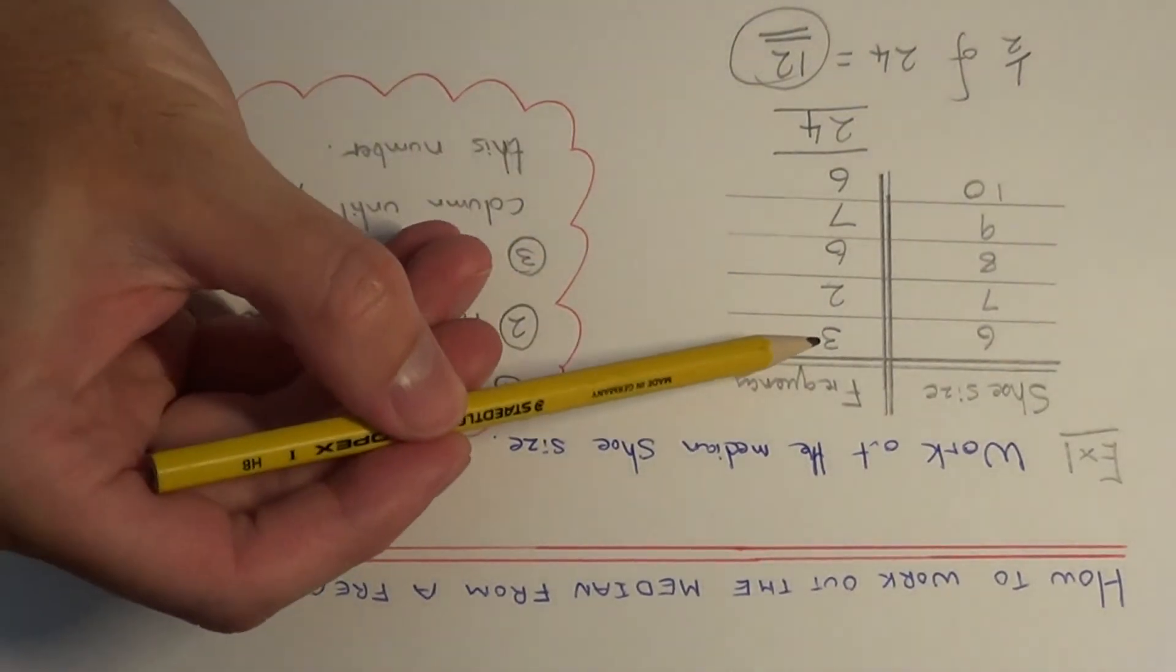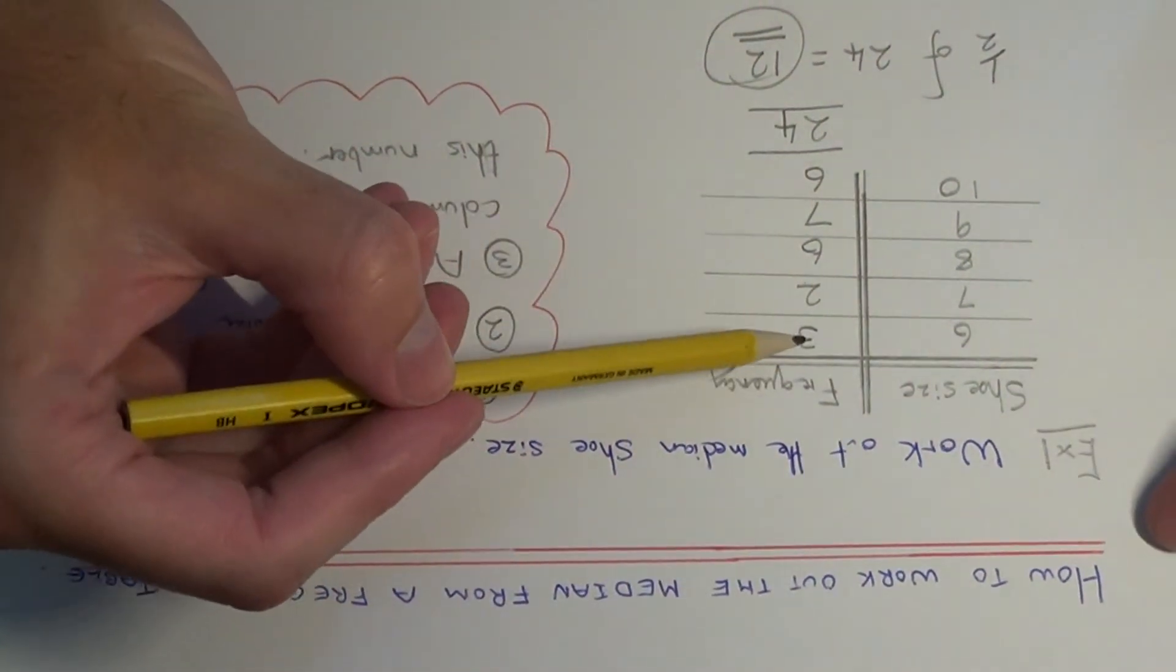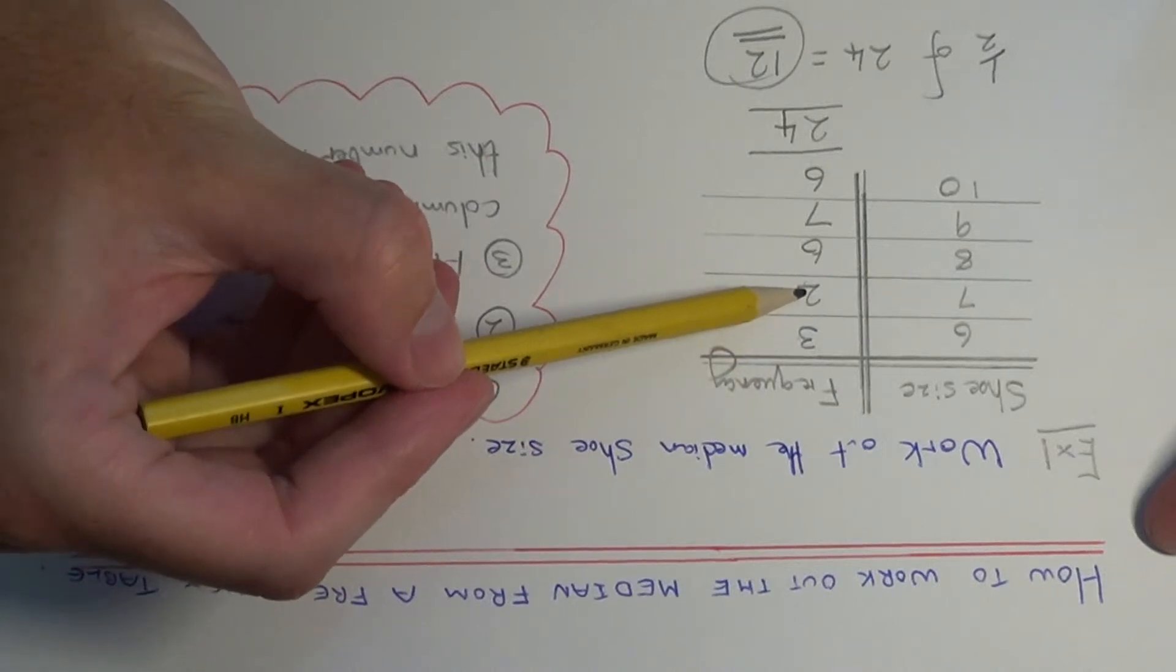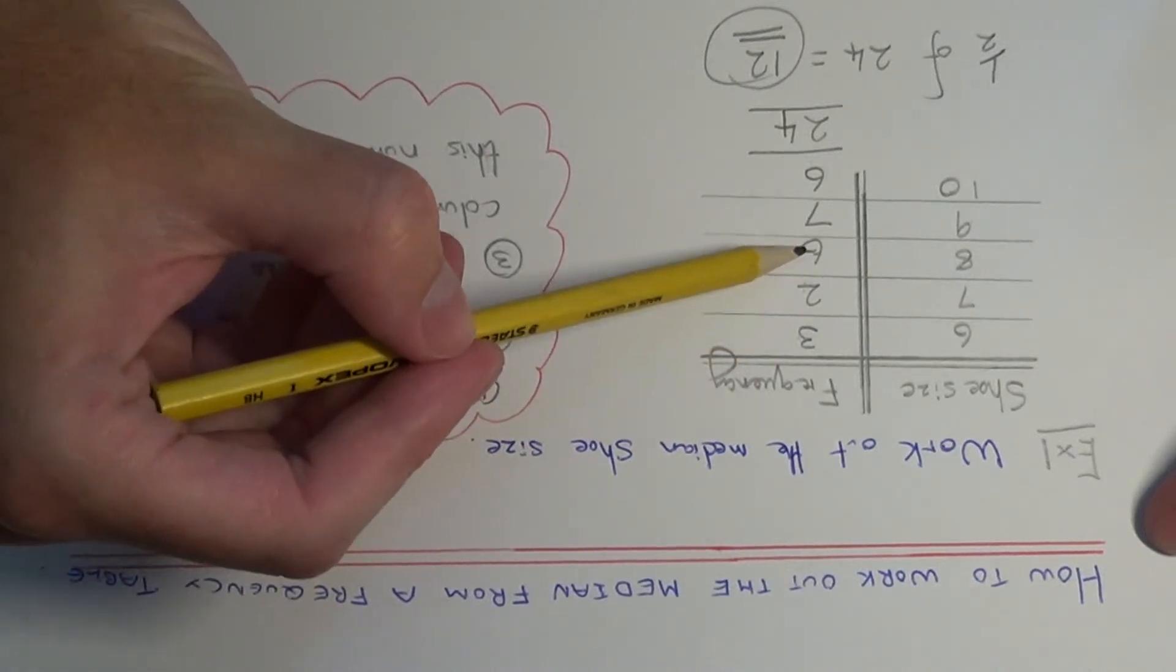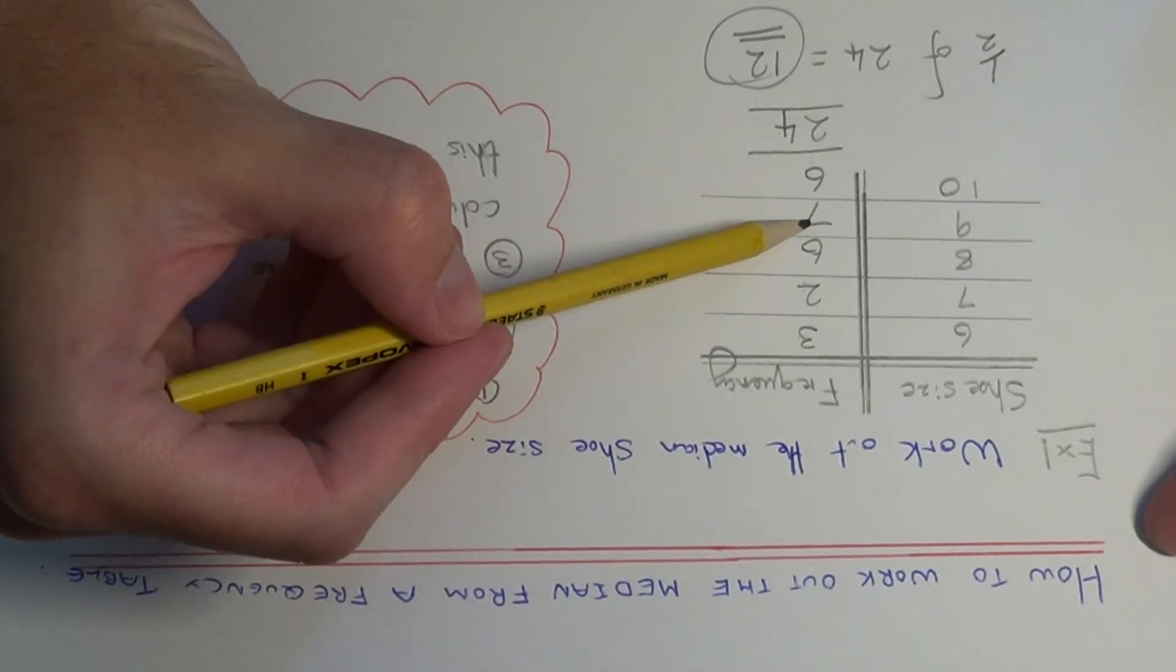So if we add up the frequency now until we go past the number 12. So we go 3 add 2 is 5, we still haven't gotten past 12. Add 6 is 11, still not there on 12. But if we add the 7 on, then we get to 18.